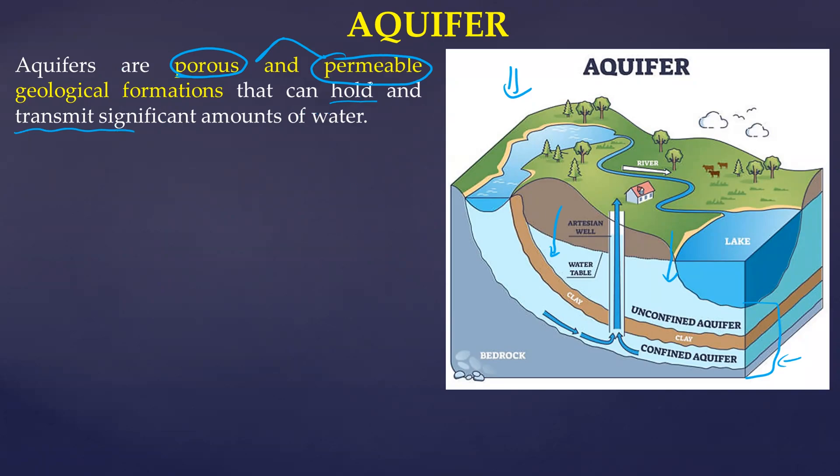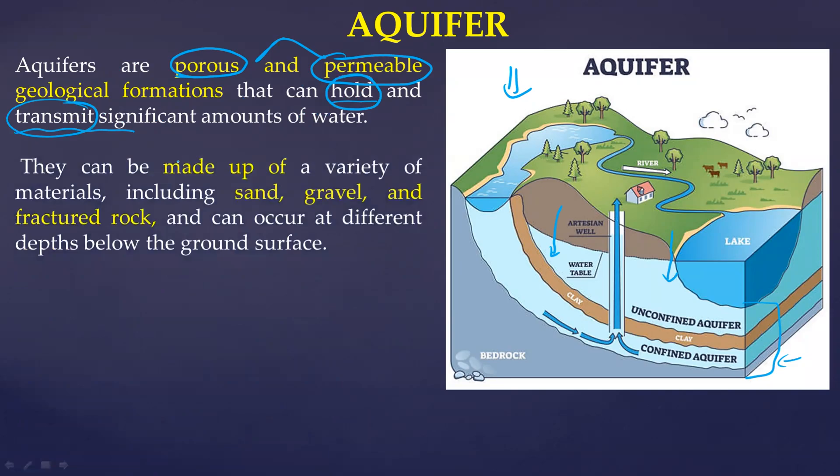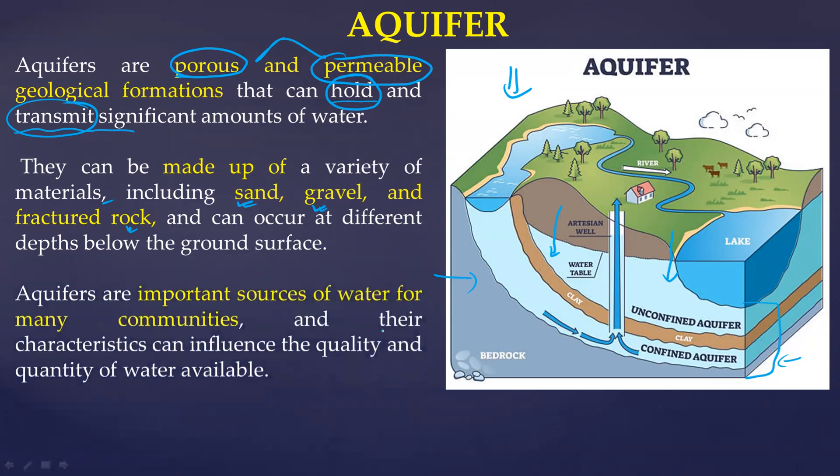We commonly call it groundwater hydrology. Now let's understand the concept of aquifer. If you see this particular diagram you can look into it yourself. The water that percolates inside, infiltrates inside is going to these layers and is called the groundwater. So aquifers are the porous and permeable, remember these two words very carefully, porous and permeable geological formations or rocks.